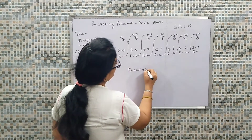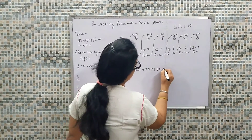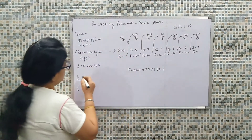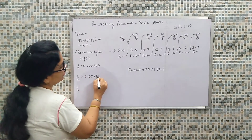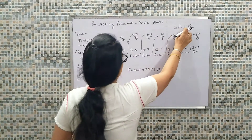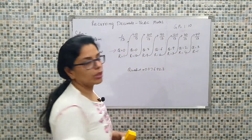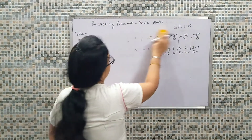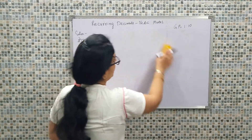So what is the quotient we are getting? By dividing, we are getting 0.076923. This is the set of values for 1 upon 13. So 1 upon 13 is 0.076923 recurring. We basically used GP, multiplied the remainder at each step, and step by step were able to calculate the quotient values.